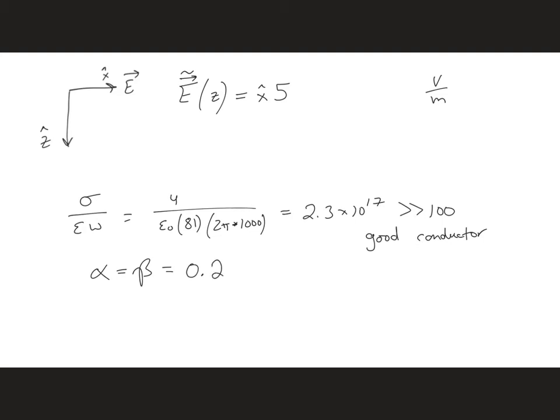So now we can use these in our expression for the electric field phasor. First, let's deal with alpha. The wave is propagating in the positive z direction, so we're going to have e to the minus point to z. This is alpha, and it's a minus in front so that it's attenuating the further it propagates into the material. If it were propagating in the minus z direction, we would have a positive point to z.